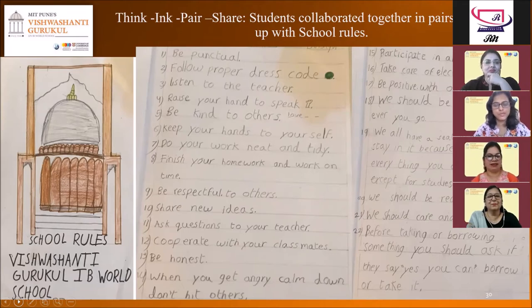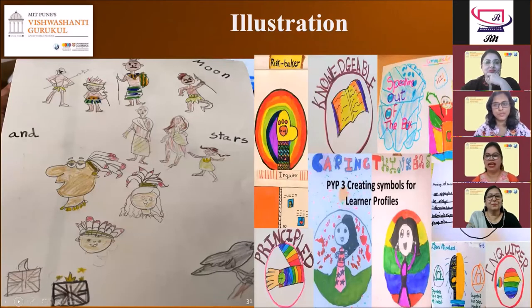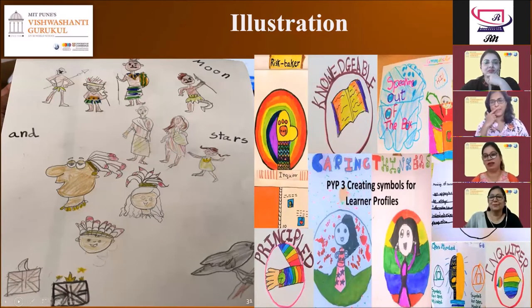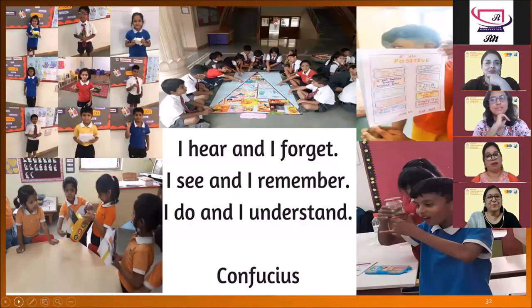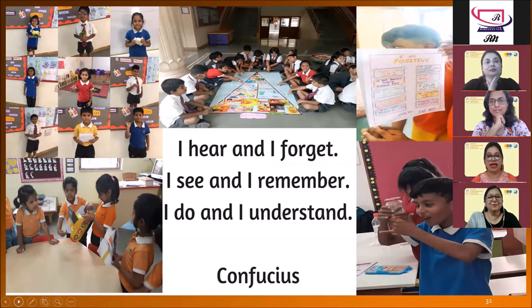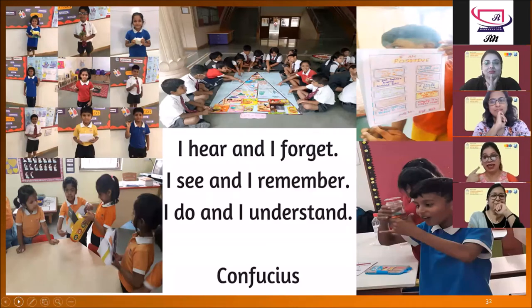Let's take a look at the next slide. Illustration — students illustrated the story of sun, moon, and stars in their own way. In the second image, students drew symbols that best represented the attributes of IB learner profiles. Beautiful, isn't it? There are many more ways to learn than by telling. As Confucius understood 2,500 years ago, learning is an active process. He reminds us of that concept by scripting the following adage: 'What I hear, I forget. What I see, I remember. And what I do, I understand.'